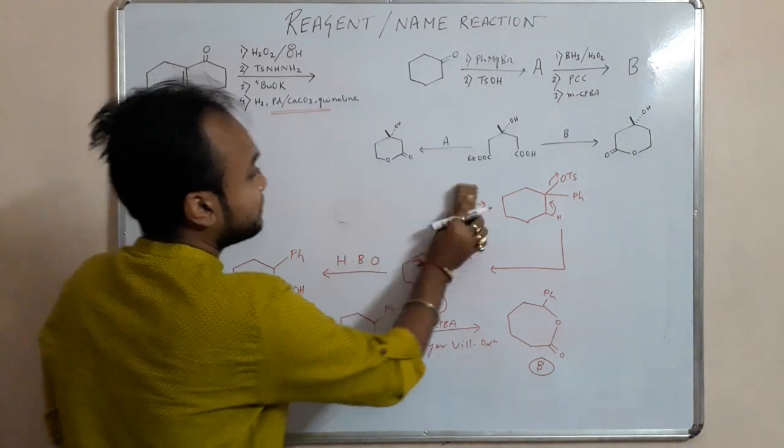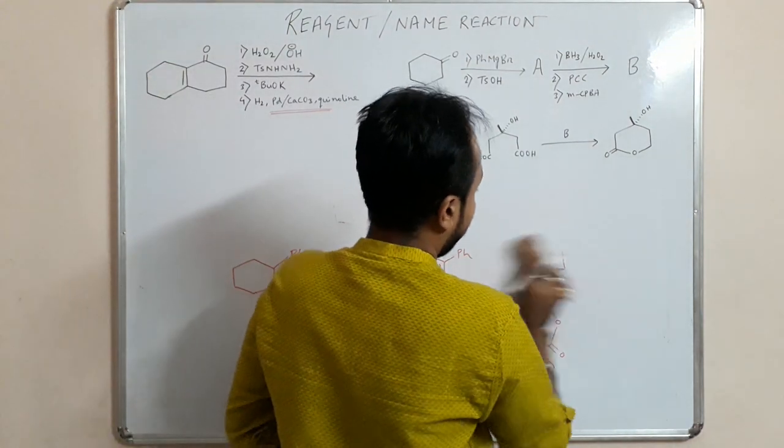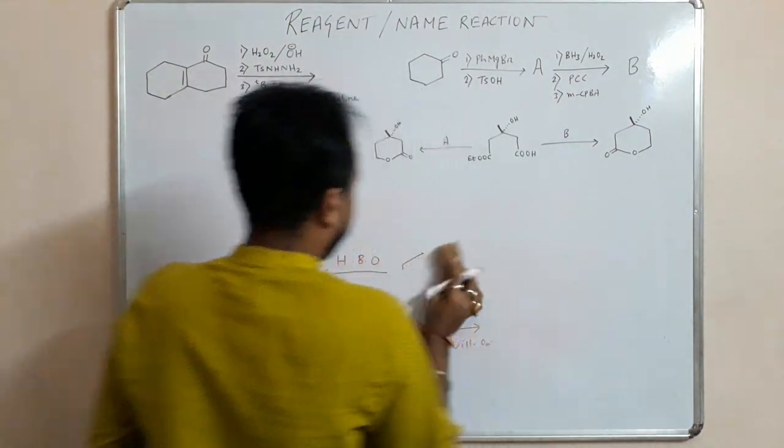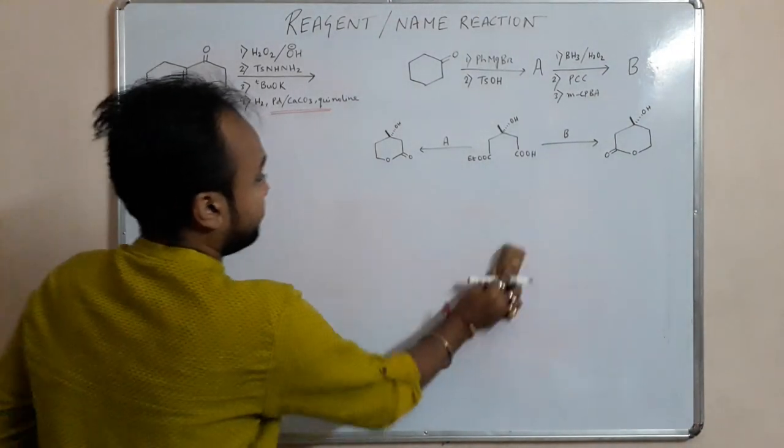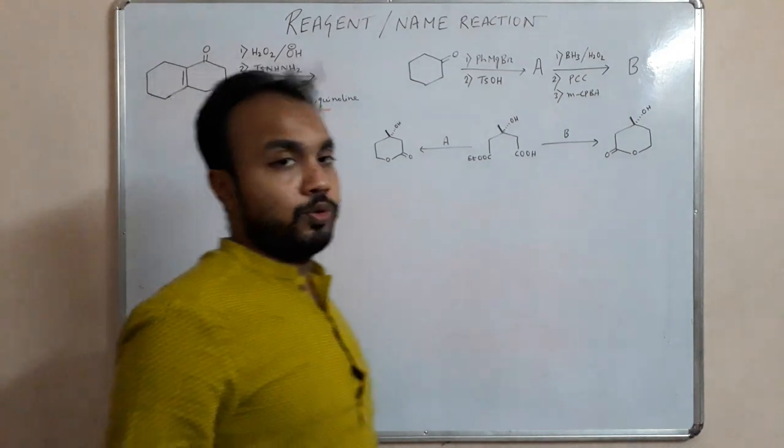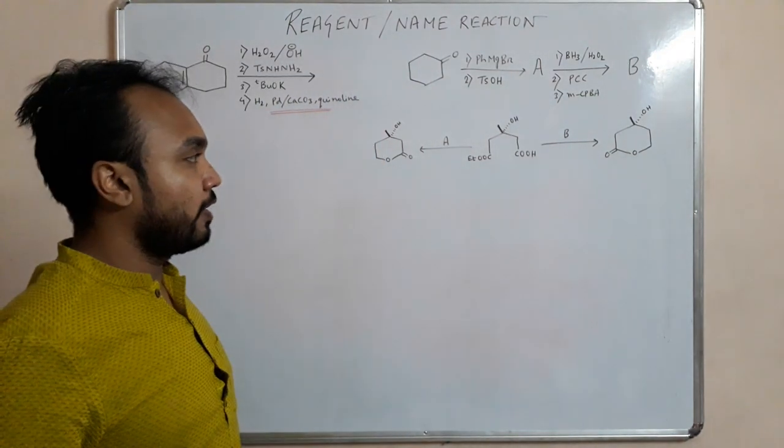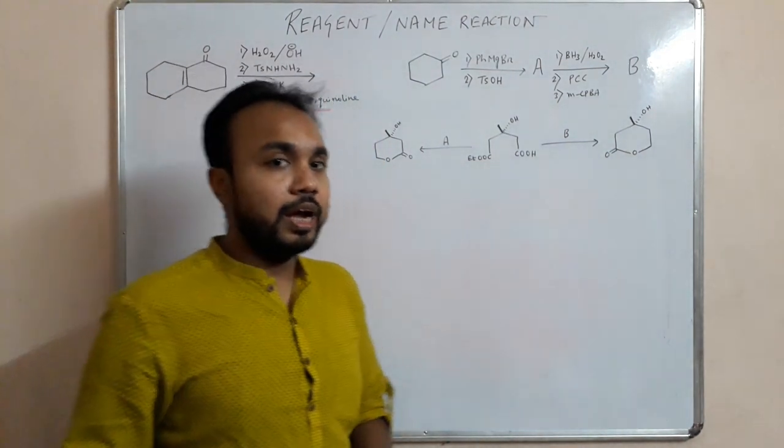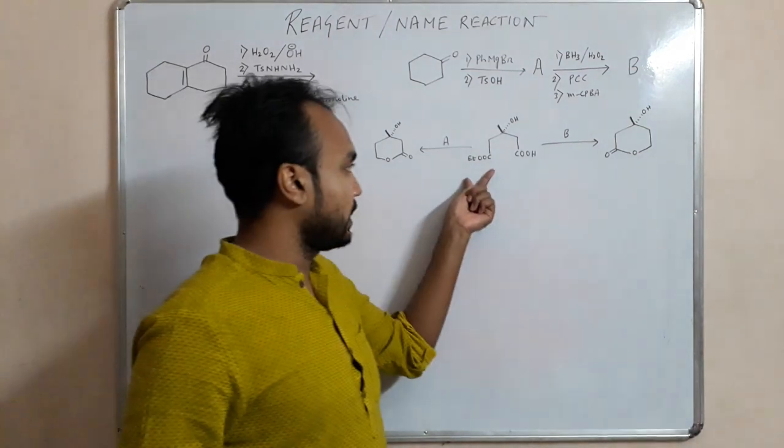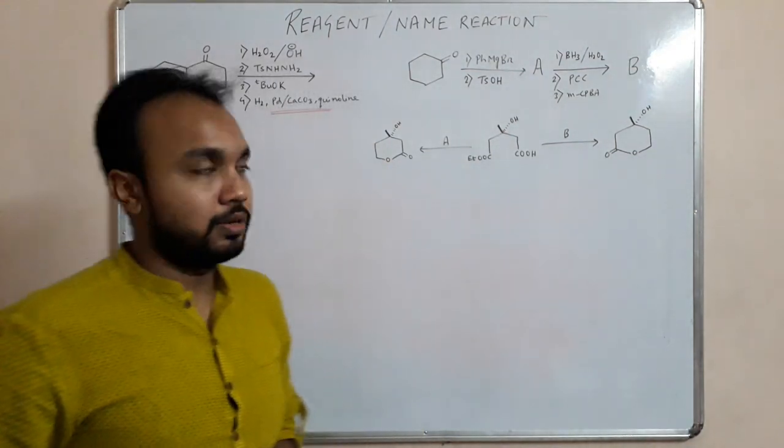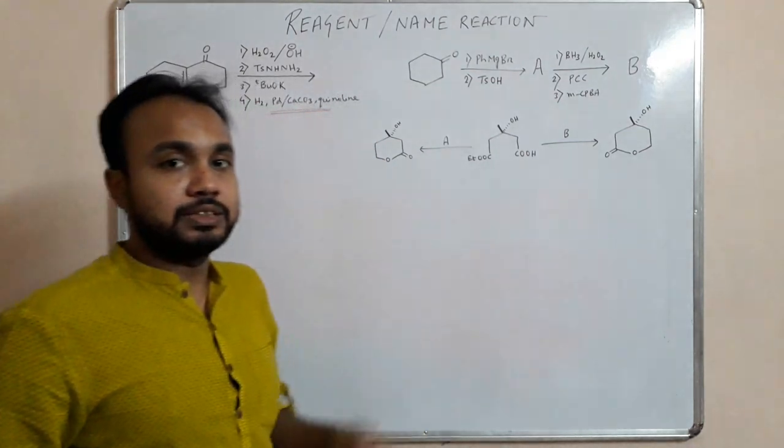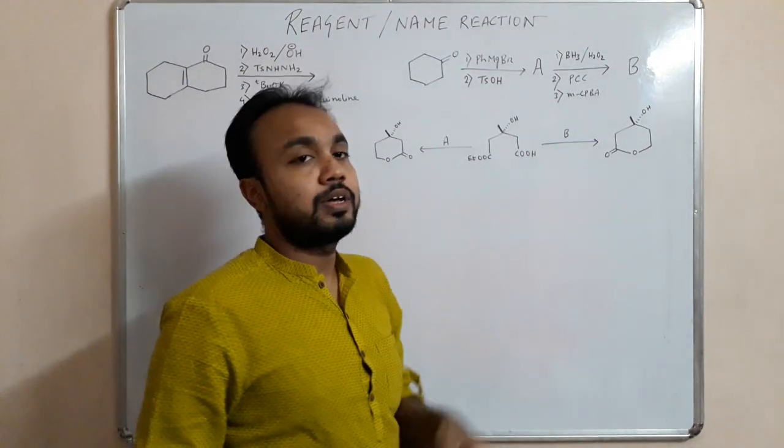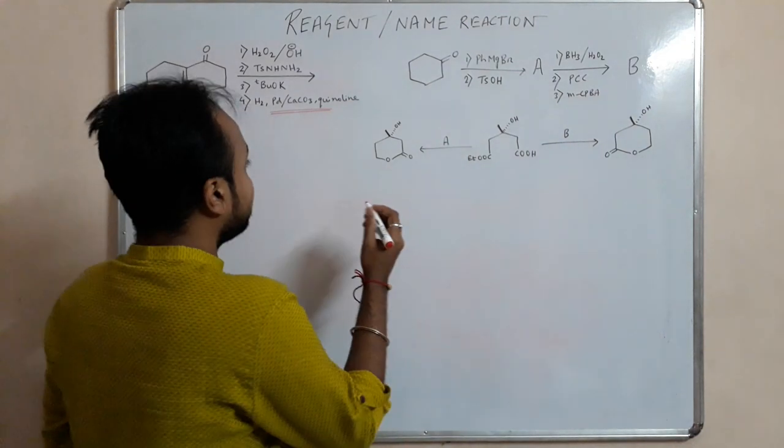Now as you all know that lithium aluminum hydride is a strong reducing agent, so it will reduce both the ester as well as the acid. So there is some selective reducing agent for acid as well as for ester.